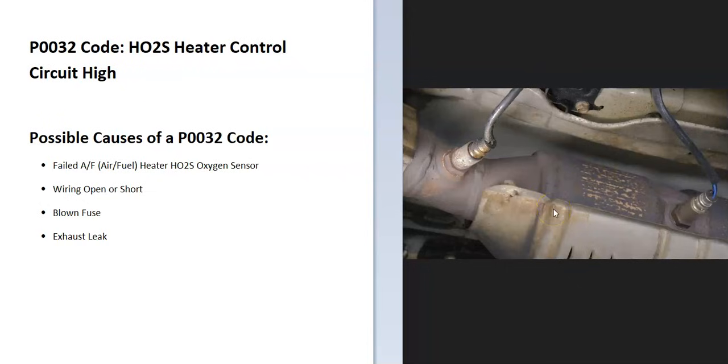So what could be some possible causes of a P0032 code? Well, it could be a bad sensor, could be in the wiring, could be a blown fuse, and it could possibly be an exhaust leak. So be sure to look around for anything that might be leaking on the exhaust since an exhaust leak can throw the sensors off.